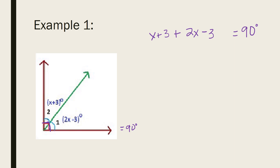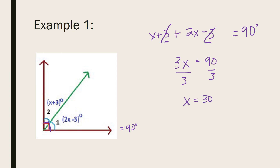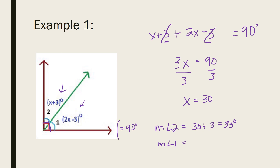Now that I have my equation set up, I can go about solving this using my algebraic skills. On the left-hand side, I need to combine like terms. I get 3x, and I have a 3 and a negative 3, so those cancel each other out. I get 3x equals 90. To solve for x, divide both sides by 3, so x is going to equal 30. Now if I substitute x back into both of my angles — for angle 2, the measure of angle 2 would be 30 plus 3, which equals 33 degrees. And so what do you think the measure of angle 1 should be? Hopefully we're thinking 57, because we want both angles to add up to 90 degrees.